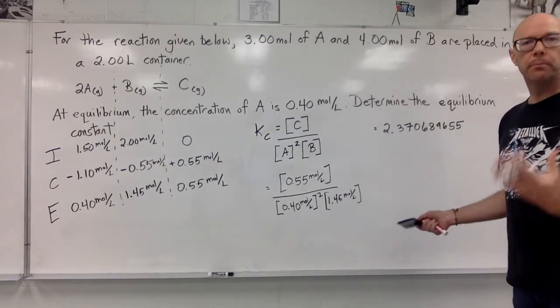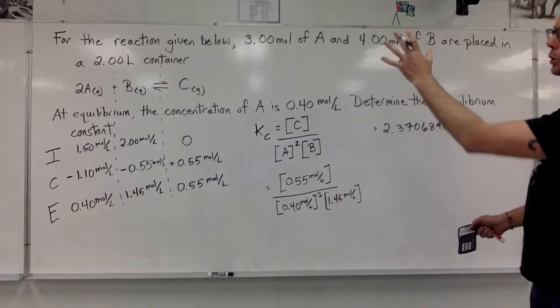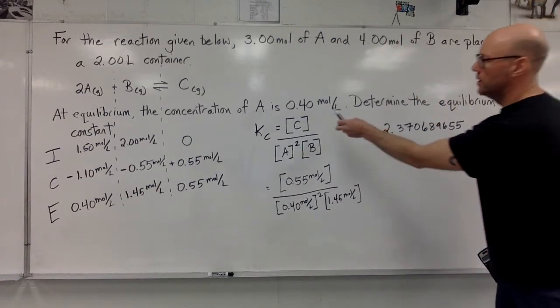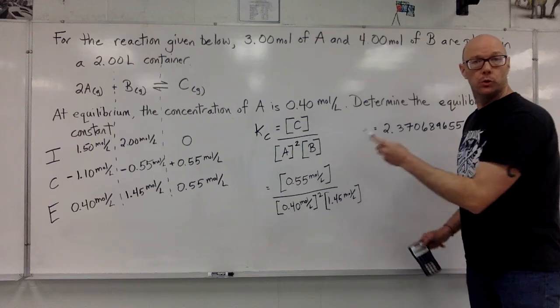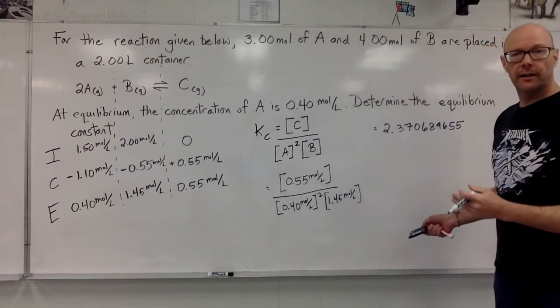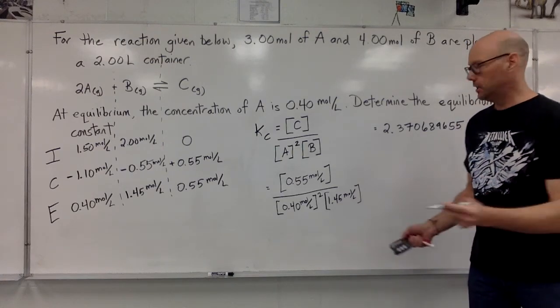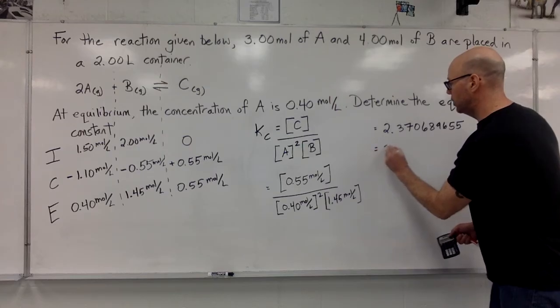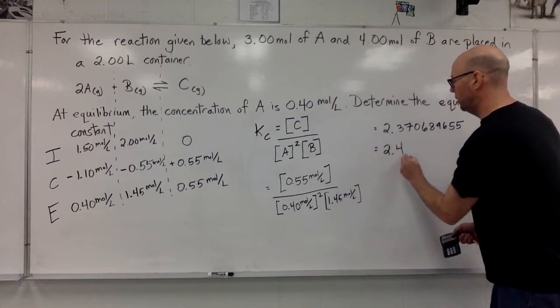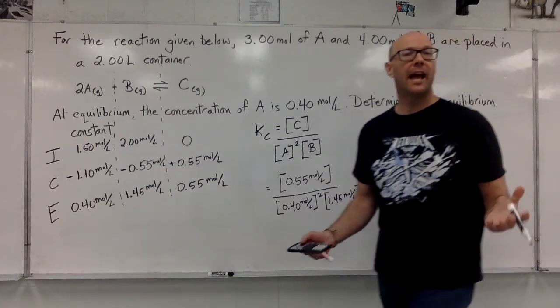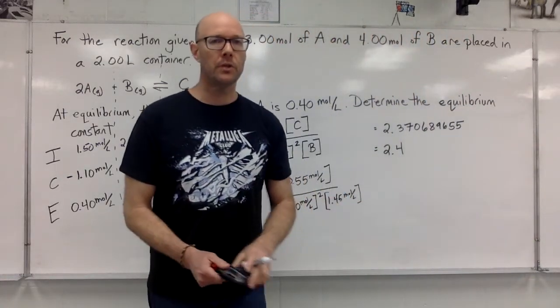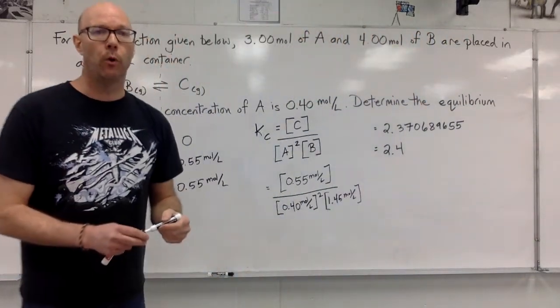I need to go back and apply my significant digits. Look back at the question. Oh, this concentration right here has only two significant digits. So our final answer must also have two significant digits. Here we have 2.4. And the equilibrium constant doesn't have units. So that is our final answer, 2.4.